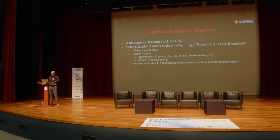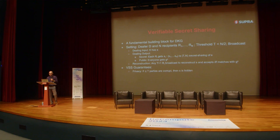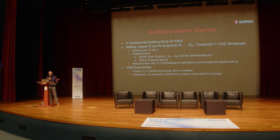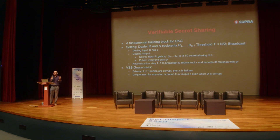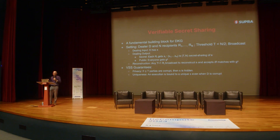Reconstruction is simple: any T+1 parties broadcast to reconstruct the secret, and they only accept if it matches the public key. The guarantees of VSS include: standard privacy — as long as up to T parties are corrupt, the secret is hidden. Uniqueness, or verifiability, guarantees that if the dealer is corrupt, they cannot make two different sets reconstruct two different secrets. A dealer is always committed to a particular unique S value.